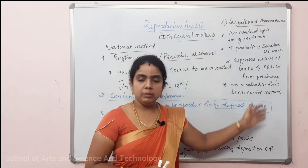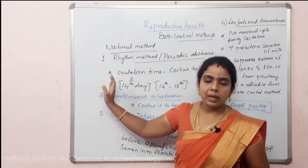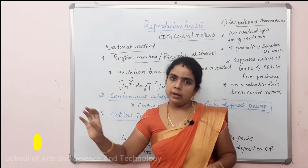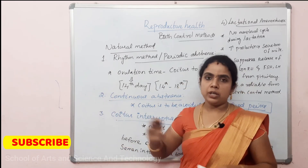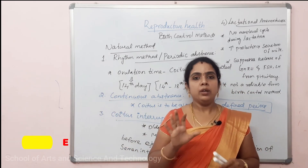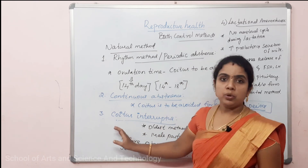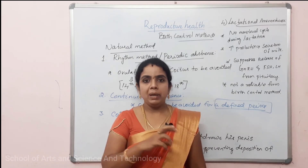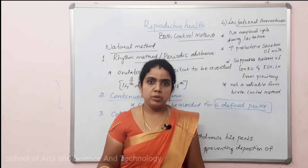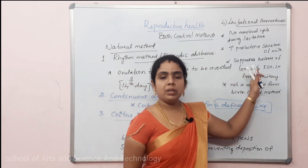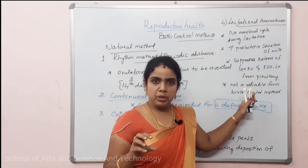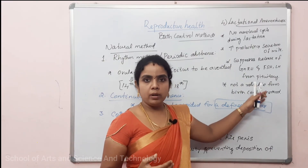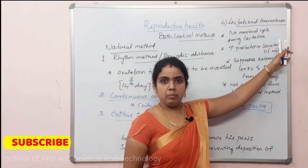To summarize the four natural birth control methods: First, periodic abstinence — for a particular period of time, sexual intercourse is avoided. Second, continuous abstinence — continuously for a defined period, coitus is to be avoided. Third, coitus interruptus — before deposition of sperm into the female body, the male partner withdraws his penis. Fourth, lactational amenorrhea — during the time of lactation, the menstrual cycle is absent, so any intercourse will not result in pregnancy.